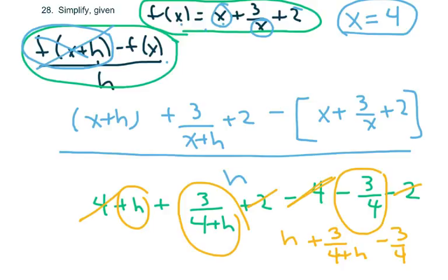And now I'm going to have to deal with this. So what we have is h plus 3 over 4 plus h minus 3 fourths. All right. So I'm going to write it on the other slide. So we have h plus 3 over 4 plus h minus 3 fourths. Now, basically, you have to know how to do rationals. This is so messy. Sorry. So 3 fourths.